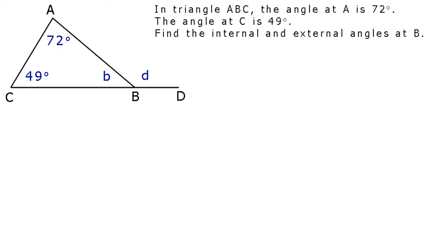In triangle ABC, the angle at A is 72 degrees. The angle at C is 49 degrees. Find the internal and external angles at B. So, let the internal angle at B be small b degrees. Let the external angle be D degrees. Since the three angles in a triangle equals 180 degrees, we can write 72 plus B plus 49 equals 180. Taking the 49 and the 72 to the other side of the equation and changing the sign, B equals 180 minus 49 minus 72.